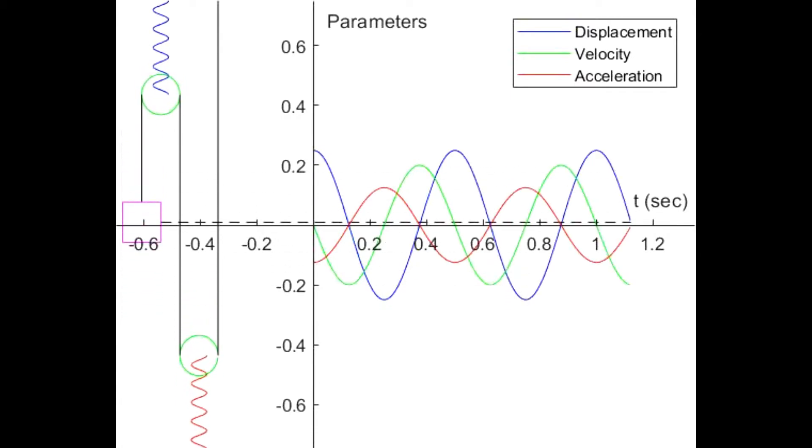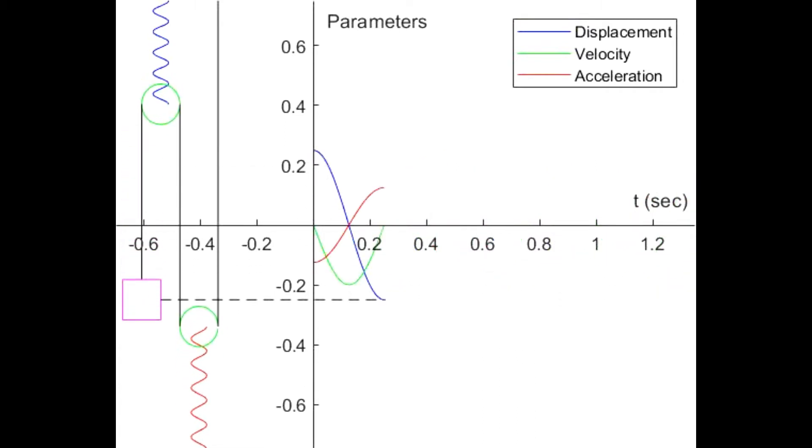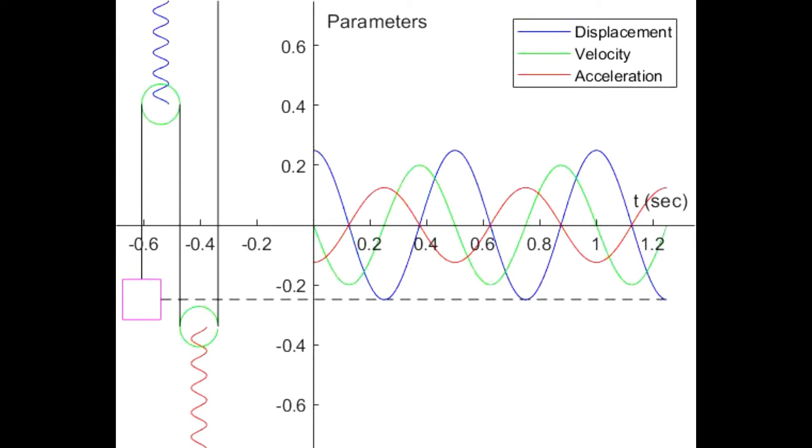This is due to the constraints set by the unstretchable string. The displacement, velocity, and acceleration of the block are plotted against time, and the applied initial conditions can be understood from the graph.